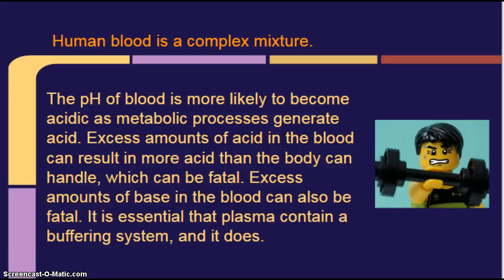And you have the plasma in there as well. And so when it's all together, you have slightly basic or slightly alkaline blood with a pH of 7.4. The pH of blood is more likely to become acidic as metabolic processes generate acid. Metabolic processes meaning that your body is doing something, like when you work out and you move your muscles.